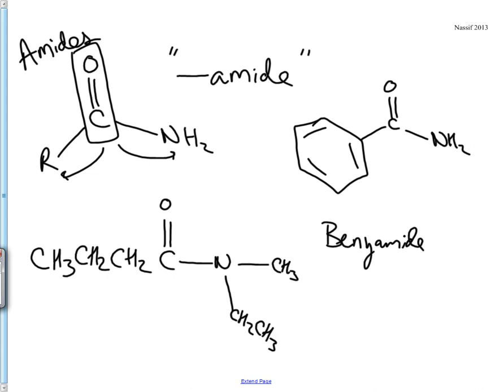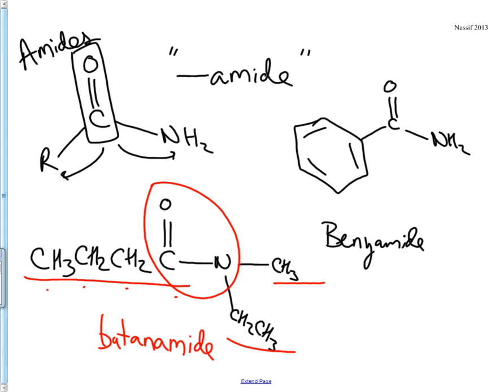Before we begin the reactions of amides, let's name this last structure. As you can see, there's a four-carbon base, an amide group, and two attachments to the amide group. The amide as a whole will be the parent chain. So, we have one, two, three, four carbons with an amide. So, right away, we know that we can name this structure butanamide.